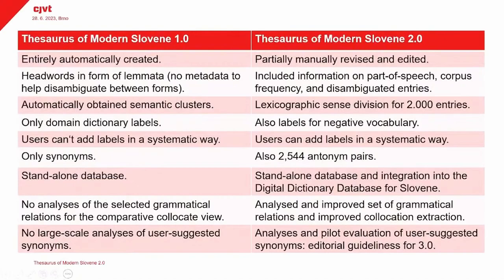Here we can see the differences between the editions of the dictionary. As I said, thesaurus 1.0 was entirely automatically created. Now it also includes manually revised and edited data. We included information on part of speech that we didn't have before, corpus frequency information, and we disambiguated homonym headwords. We included sense divisions for 2,000 entries and we included labels for negative vocabulary.